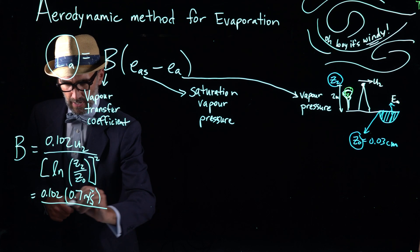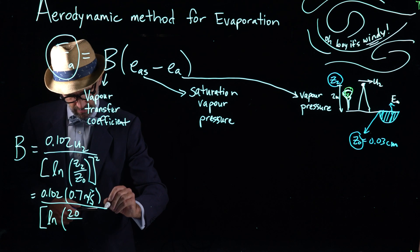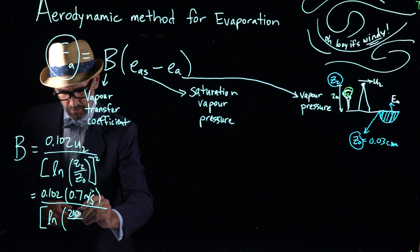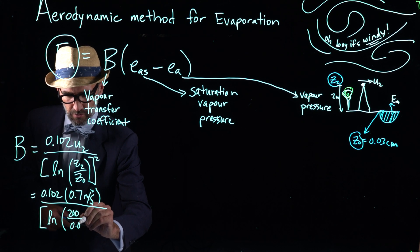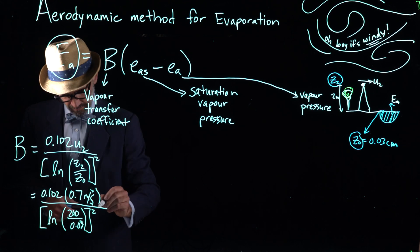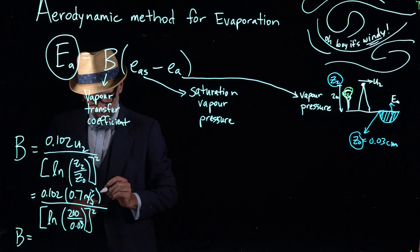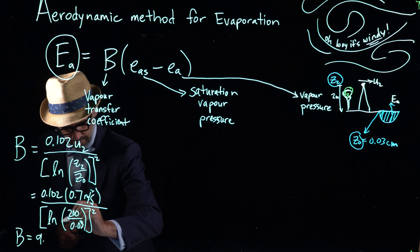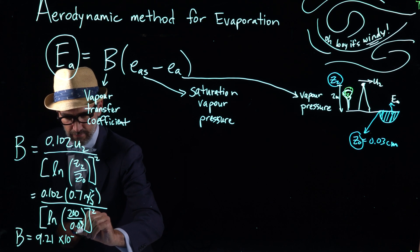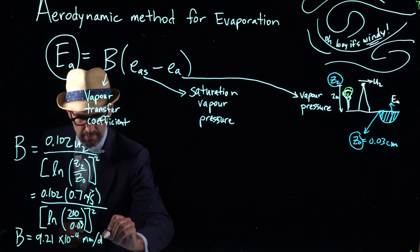All divided by square bracket long 200 centimeters divided by 0.03 centimeters, all squared. And what that results in is B is equal to 9.21 times 10 to the negative 4 millimeters per day pascal.